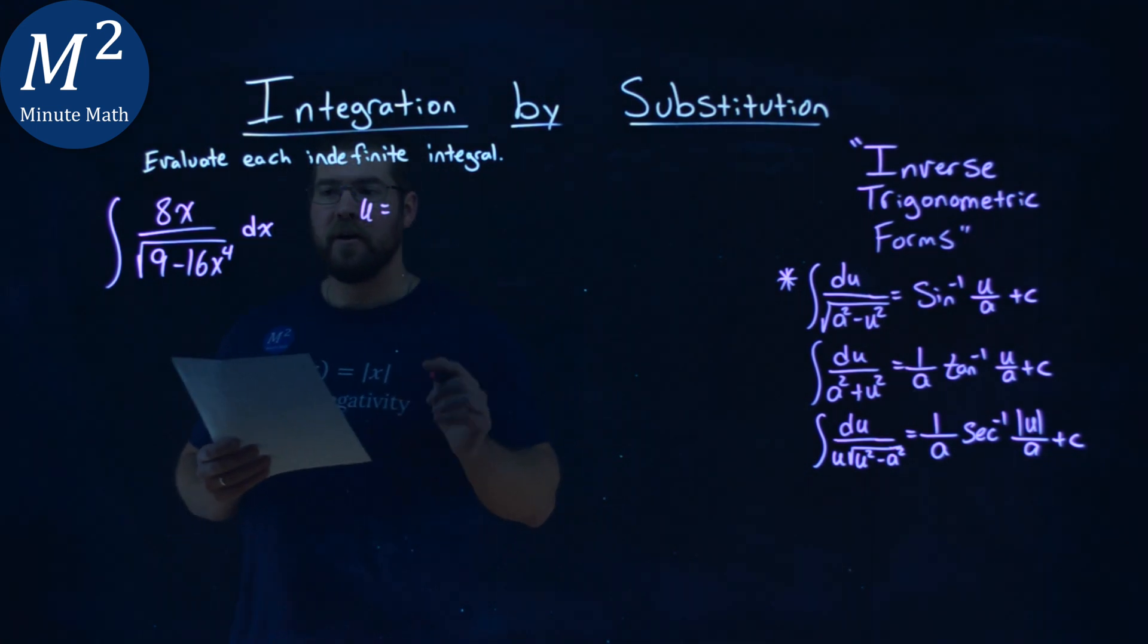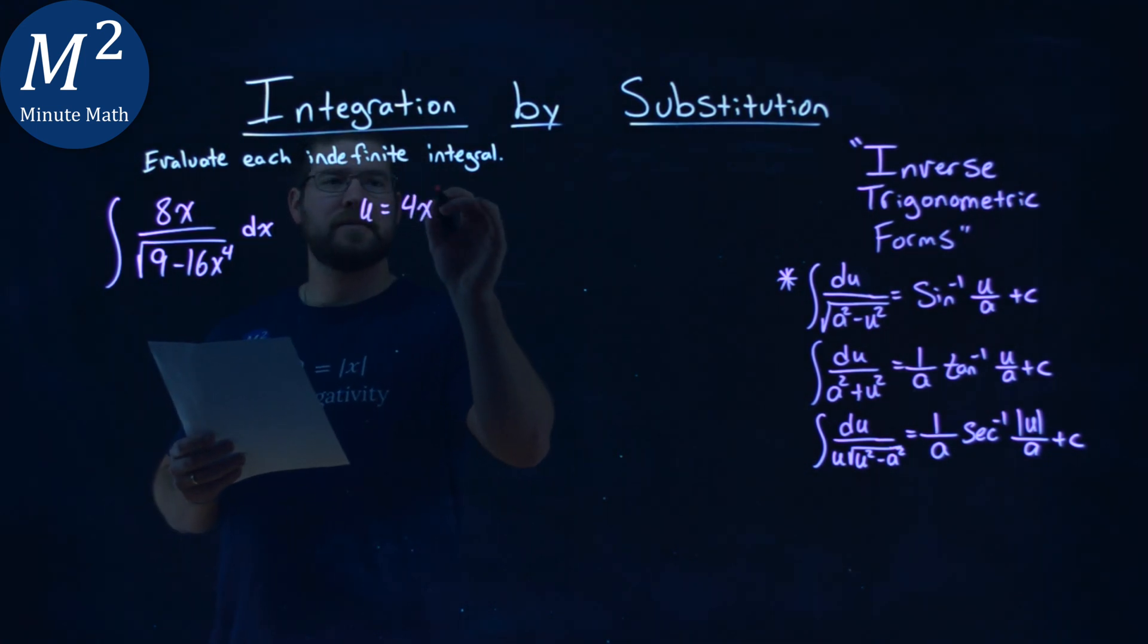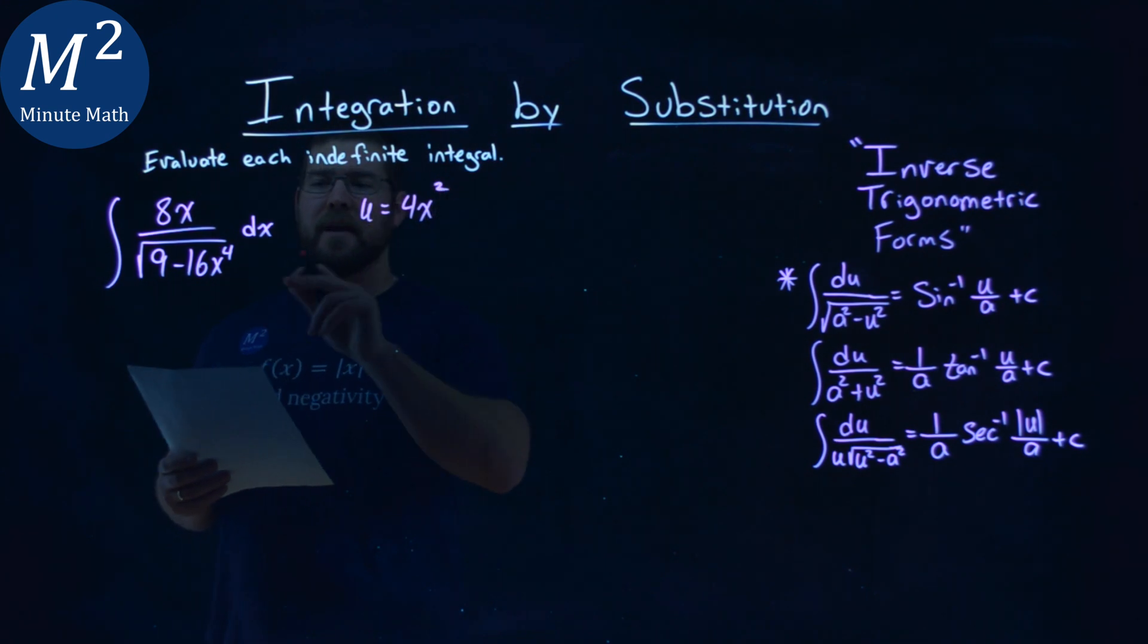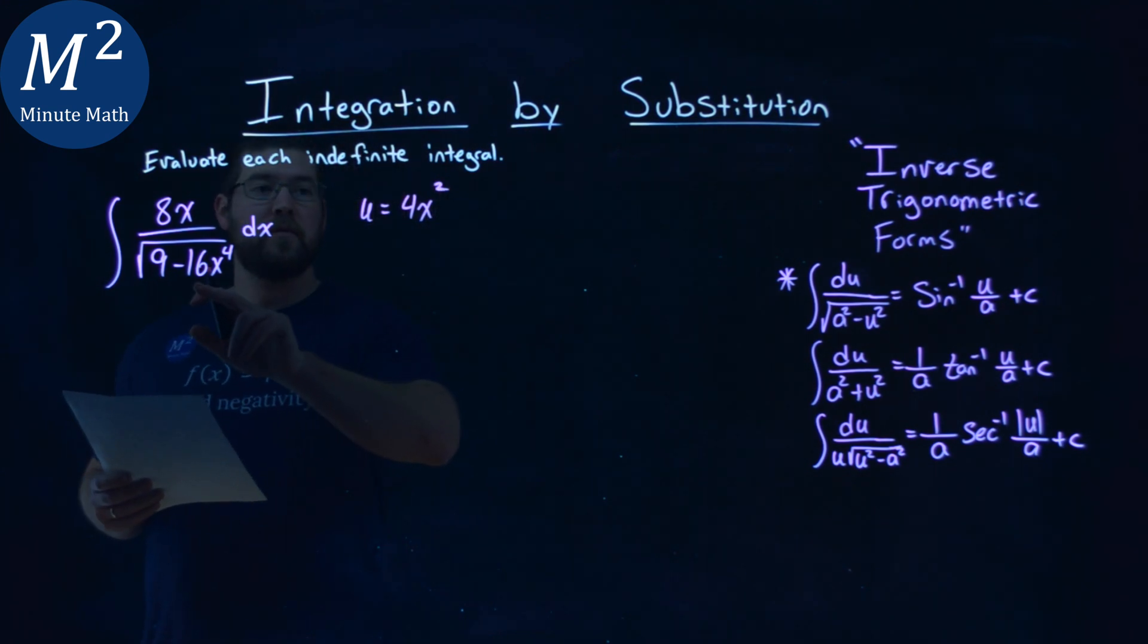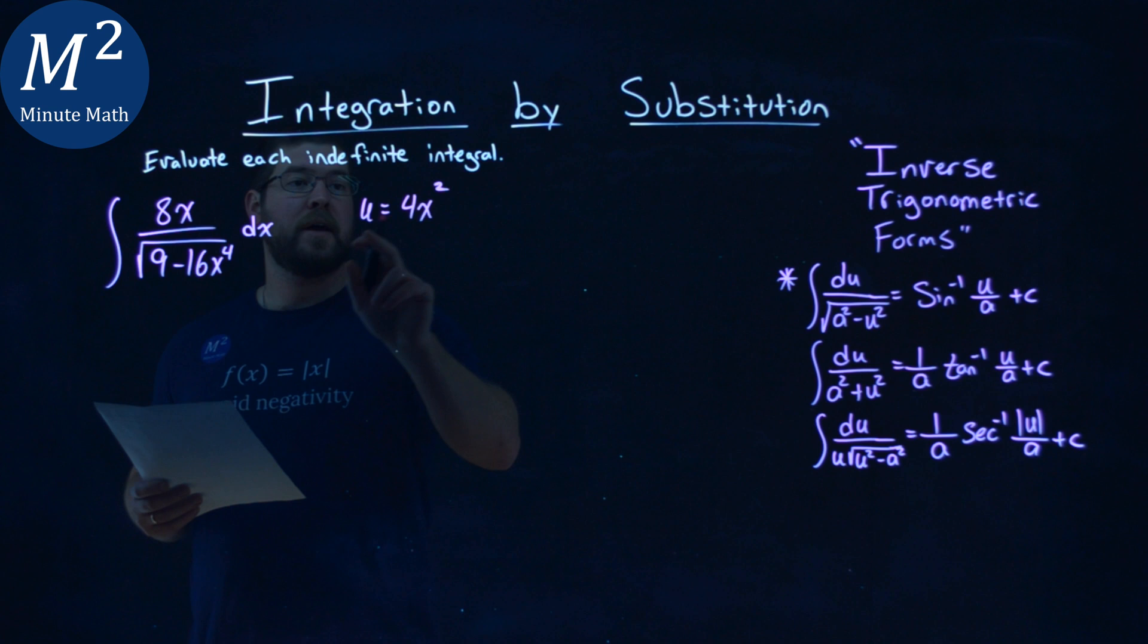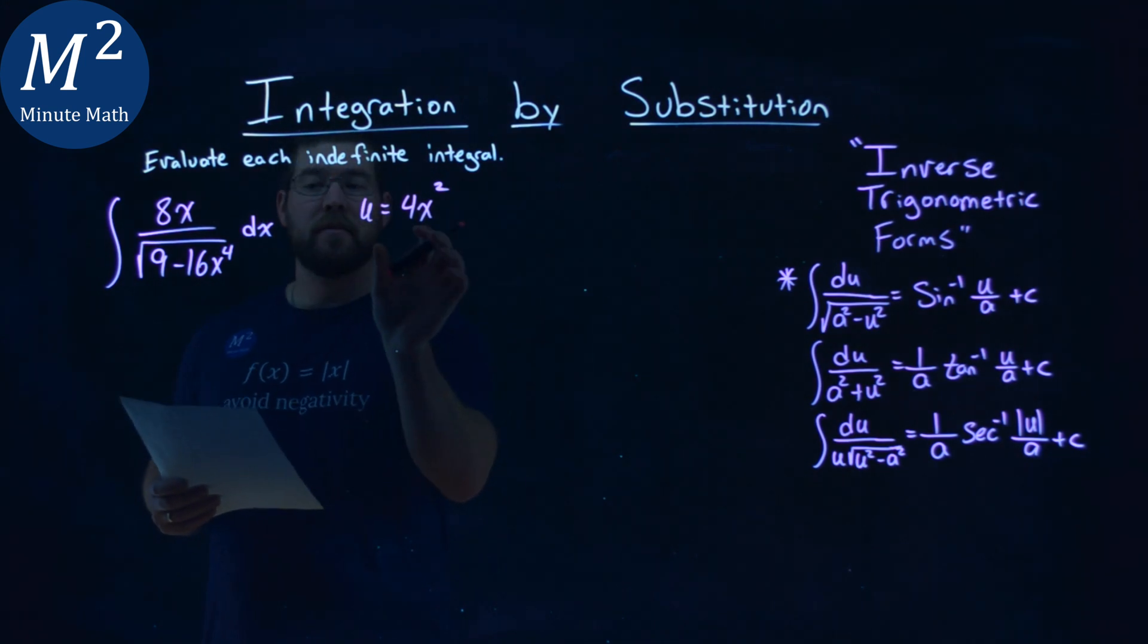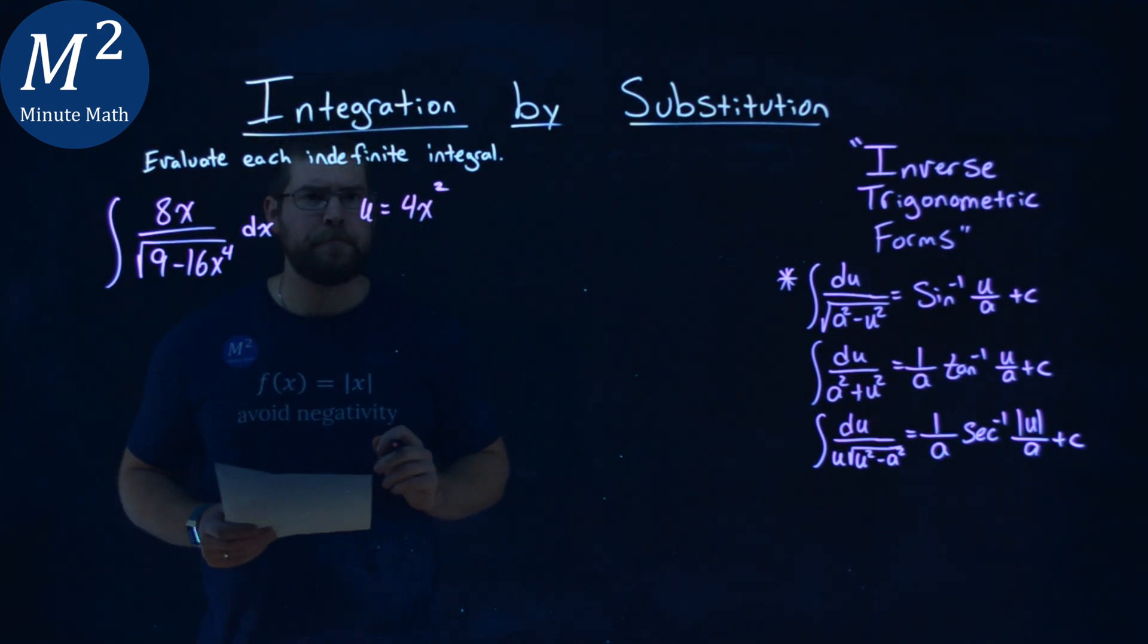So I get a u value of 4x squared. I take the square root of both parts. Square root of 16 is 4, square root of x to the 4th power is x squared. Knowing that if I squared everything, I get back here.